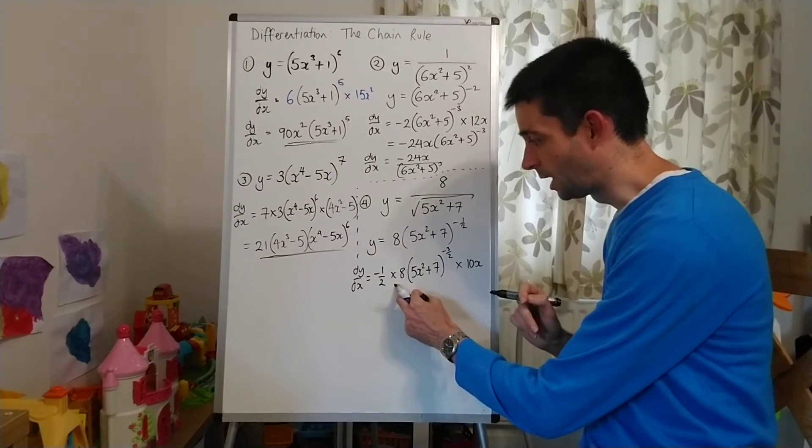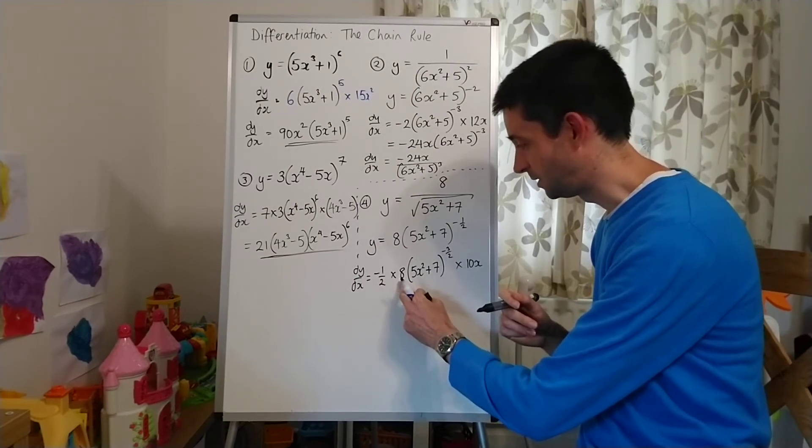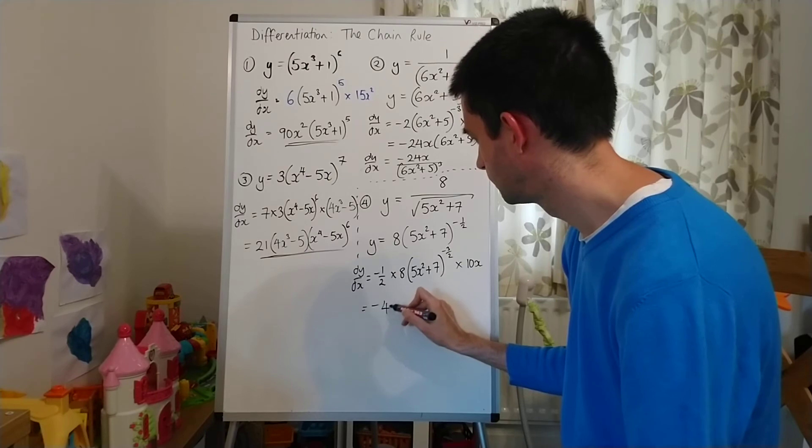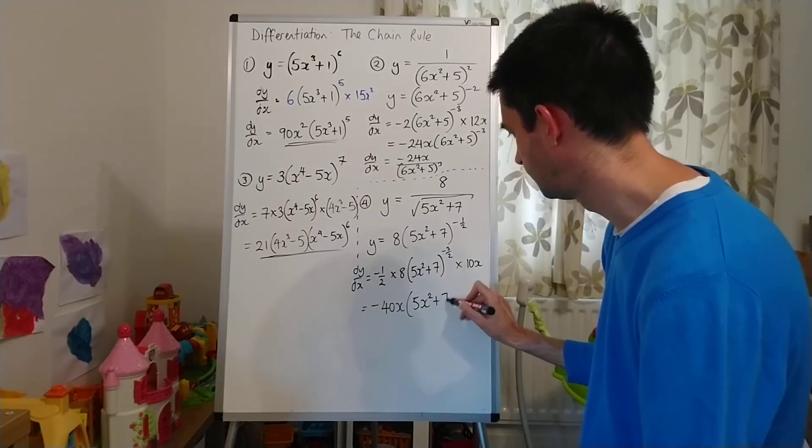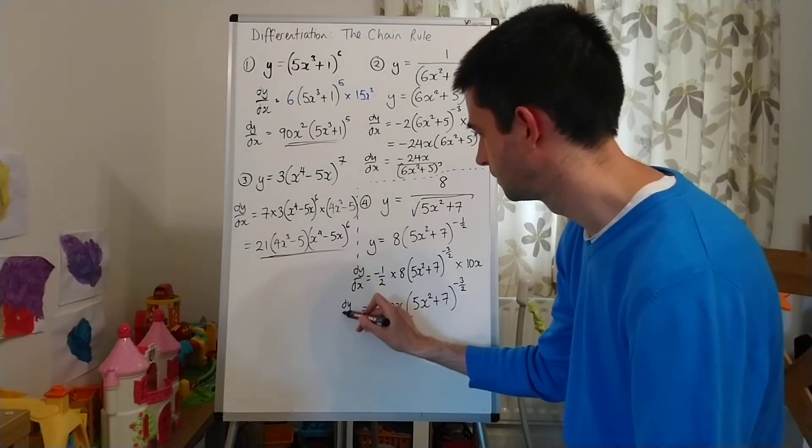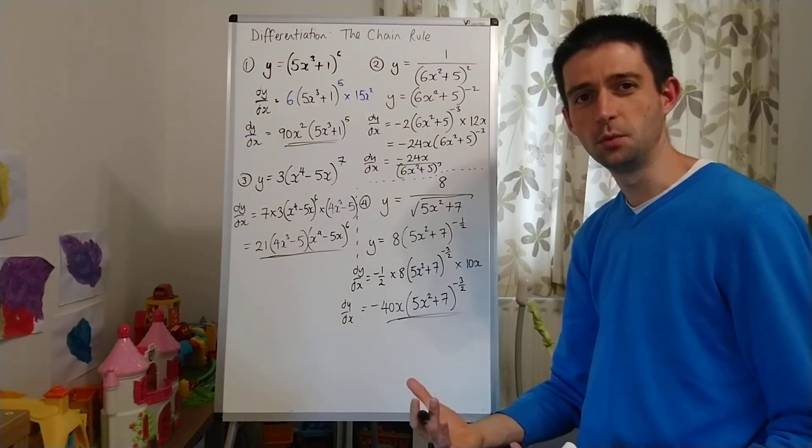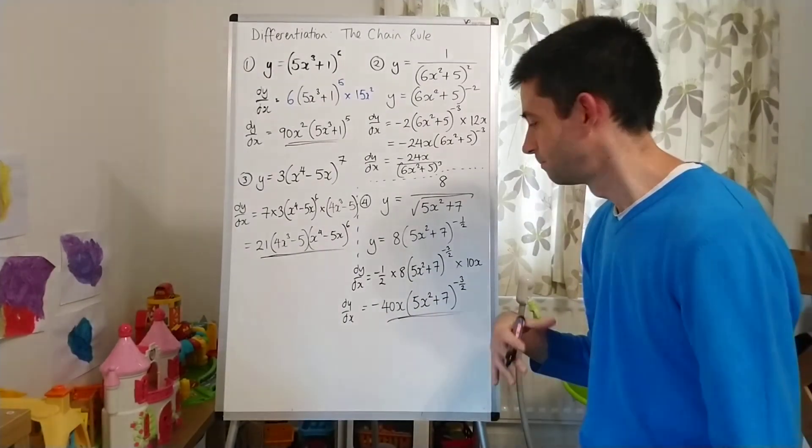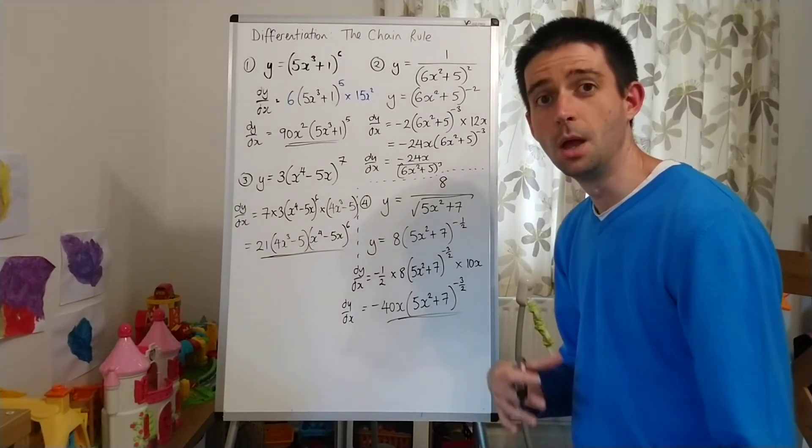And let's just tidy this up a little bit. -1/2 times by 8. Sorry, it's -4. Let me see if I'm getting ahead of myself. -1/2 times 8 is -4. Times by 10 is -40x. And then we have (5x²+7) to the power of -3/2. Which you could write back as a fraction if you wish to. But I think actually it's neater looking like that for now. Otherwise you have roots and cubes all over the place. It just starts to look a bit messy.